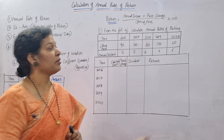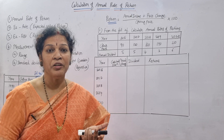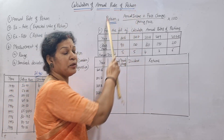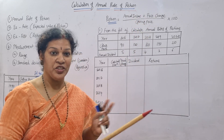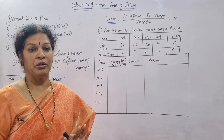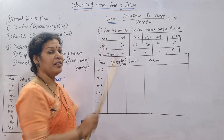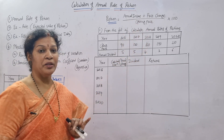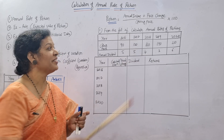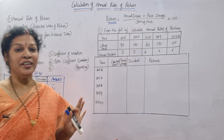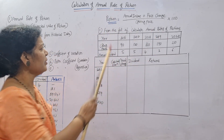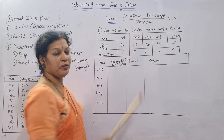Annual income is either interest or dividend received each year. Price change is how much the price is changing. Opening price is the beginning price. So the formula is: Annual Income + Price Change divided by Opening Price, multiplied by 100. A problem is given: from the following information, calculate the annual rate of returns.